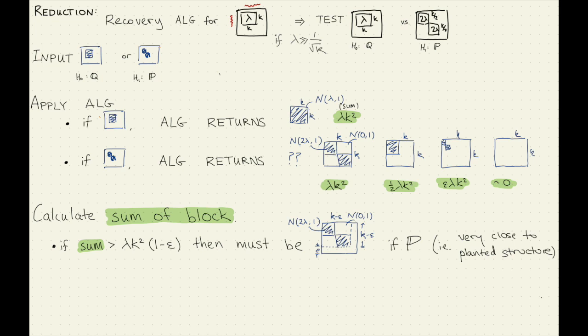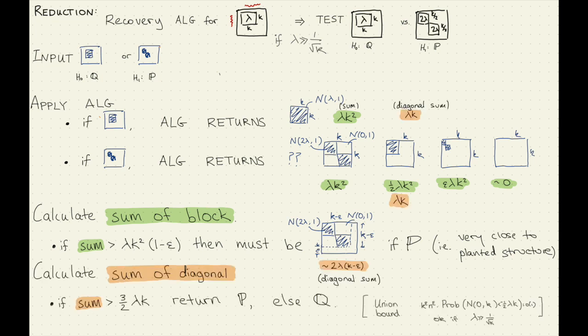If the sum is bigger than what it's meant to be minus a little bit, then in H-naught you're in this situation for free; in H1 you now know you're pretty close to picking up the planted structure — maybe with some epsilon. Once you know you're vaguely in the right area, you can calculate the sum of the diagonal of the K-by-K block, and that distinguishes it for you: the diagonal in the original case gives you lambda times K, whereas if you've picked up most of the planted structure in the two-community case it's almost two times lambda times K.